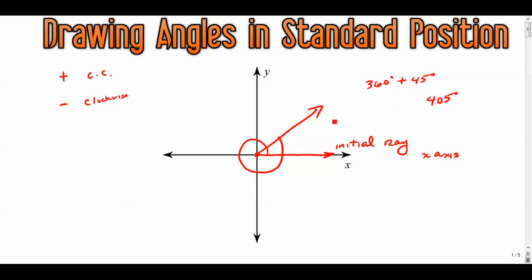That would be 360 degrees plus another 45 degrees, so that would be 405 degrees. It goes around more than once and stops here at what we call the terminal side or terminal ray.